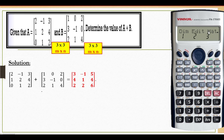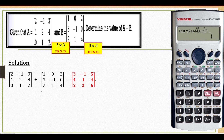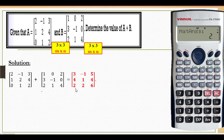After that, I press shift for number 3 — number 3 is for us to call out the matrix we keyed in. Matrix A, so press 1 for matrix A, plus matrix B. Shift for number 3, then press 2 for matrix B. So matrix A plus matrix B — equal to. The result: 1,1 is 3; 1,2 is negative 1; 1,3 is 5. Then 2,1 is 4; 2,2 is 1; 2,3 is 4. Then 3,1 is 2; 3,2 is 2; and the last one, 3,3 is 6.